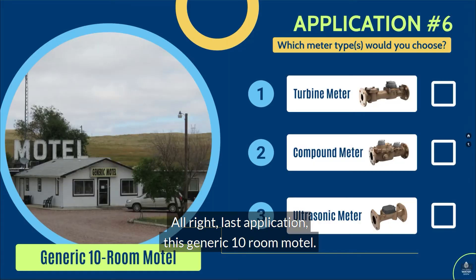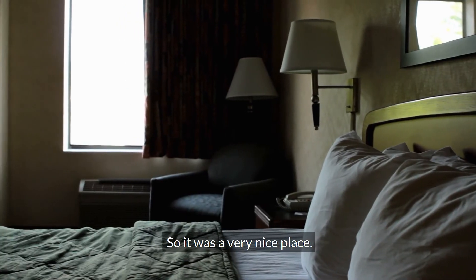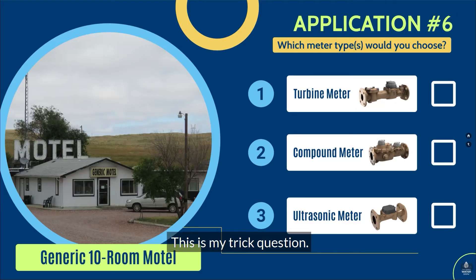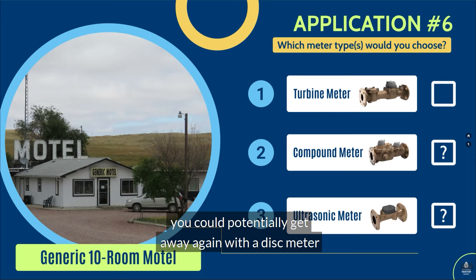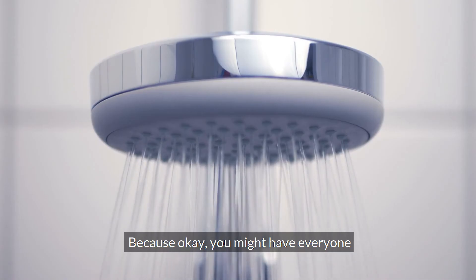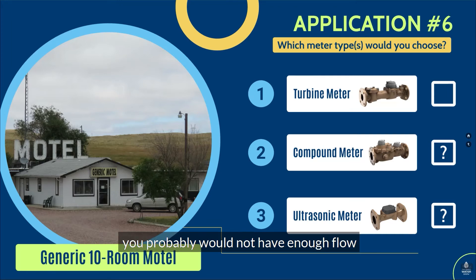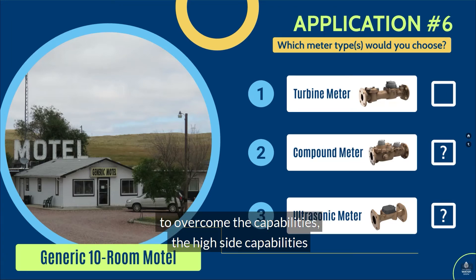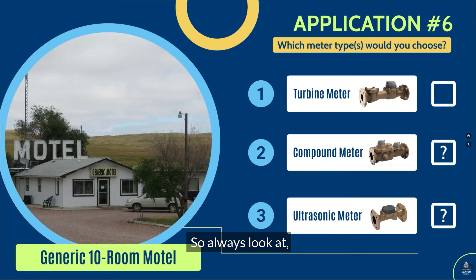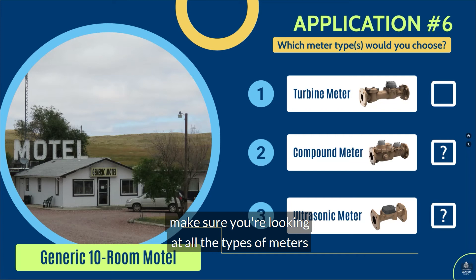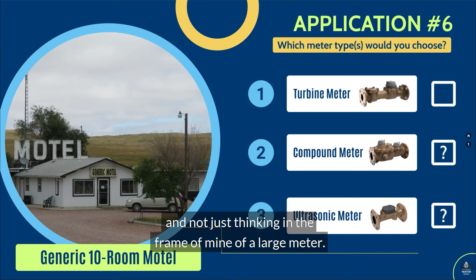The last application is a generic 10-room motel. If I had to choose between these three meters, I would put a compound or an ultrasonic meter. But another thing to think about here is that you could potentially get away with a disc meter in this application, because even if everyone is using a shower at the same time, you probably would not have enough flow to overcome the high-side capabilities of a disc meter. A two-inch disc meter has a flow up to 170 gallons per minute, and it wouldn't be a constant flow — it would be intermittent. So always look at all the types of meters, even in commercial or industrial applications, and not just think in terms of a large meter.